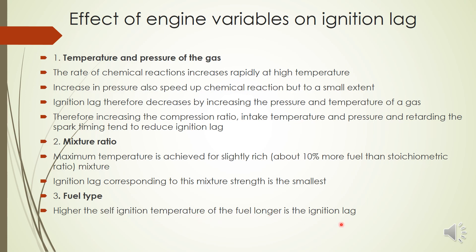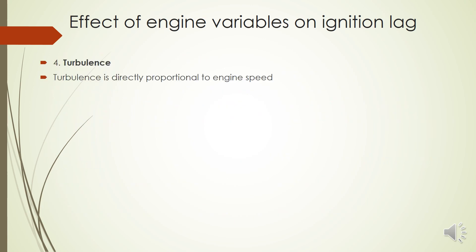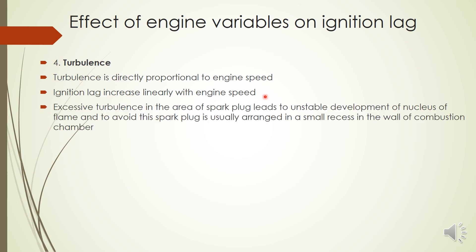Regarding fuel type: a fuel with higher self-ignition temperature will result in a longer ignition lag. Regarding turbulence: turbulence is directly proportional to engine speed, so as engine speed increases turbulence increases, and ignition lag increases linearly with engine speed. If excessive turbulence exists near the spark plug area, flame development will be unstable, so the spark plug is normally arranged in a small recess in the wall of the combustion chamber to avoid this.